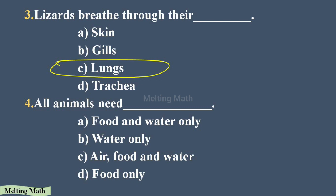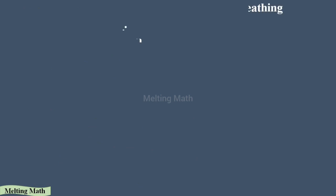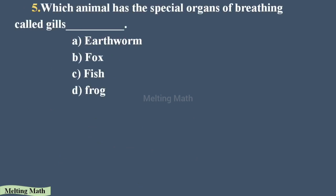Question five: which animal has a special organ of breathing called gills? Gills is a water respiratory organ we already discussed in the previous video. It occurs only in water-dwelling fish. So option C is the correct answer.